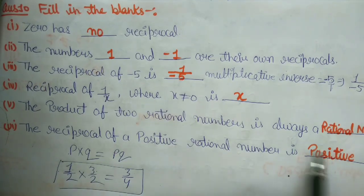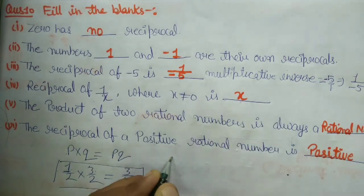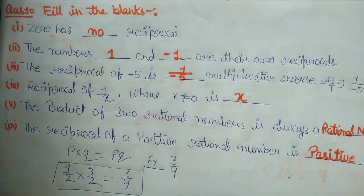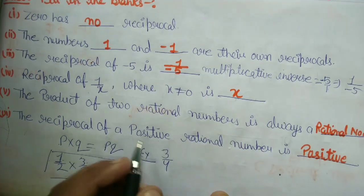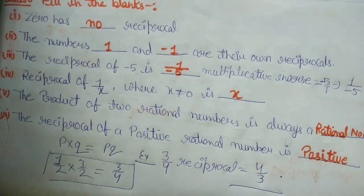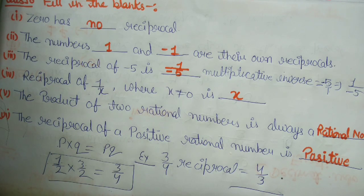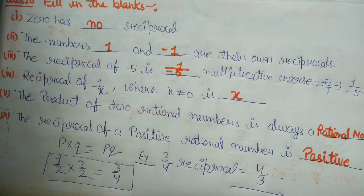Question number 6: The reciprocal of a positive rational number is positive. For example, 3 by 4 — iska reciprocal 4 by 3 hai, which is positive. So the reciprocal of a positive rational number is always positive. Friends, our exercise 1.1 we have completed, and in the next video we will do exercise 1.2. Please subscribe to my channel, like the video, and share with other students. Thank you.